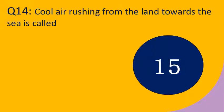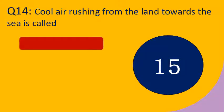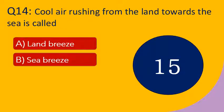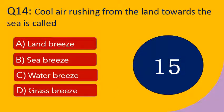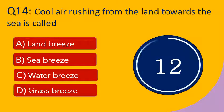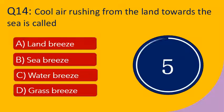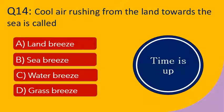Question number 14: Cool air rushing from the land towards the sea is called — options: A. Land breeze, B. Sea breeze, C. Water breeze, and D. Grass breeze. Your time starts now. Your time is up. The right answer is land breeze. Cool air rushing from the land towards the sea is called land breeze.